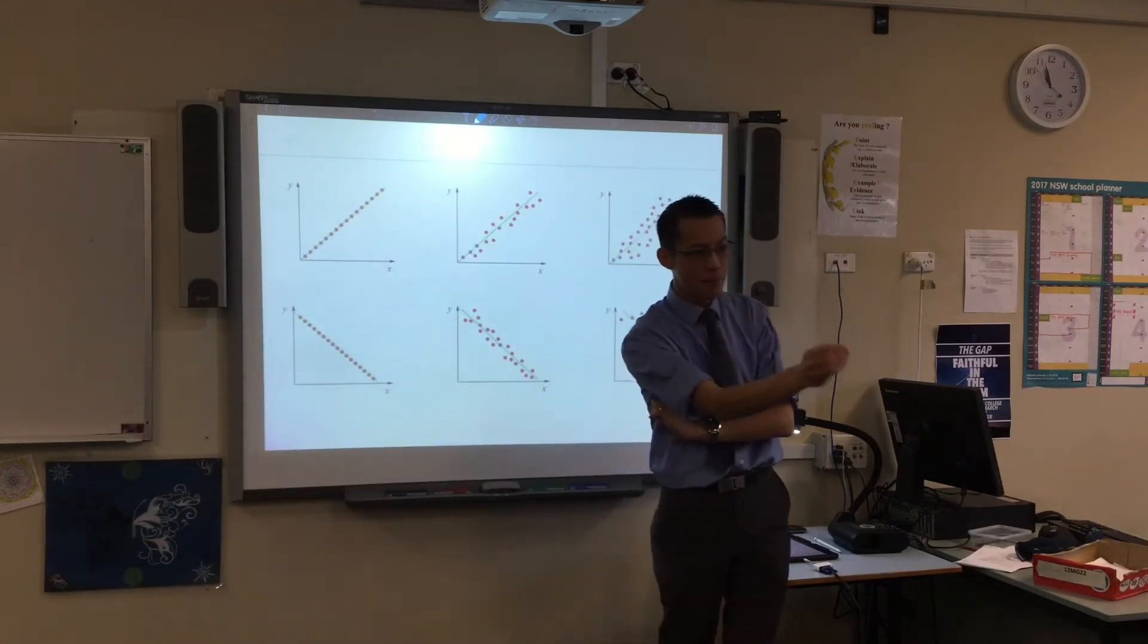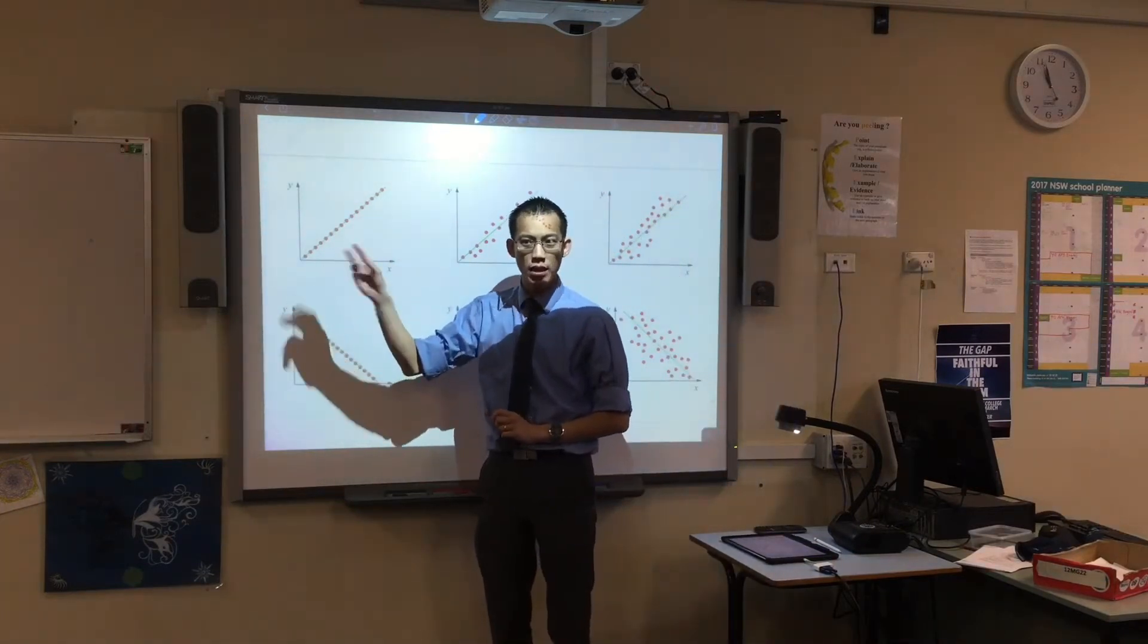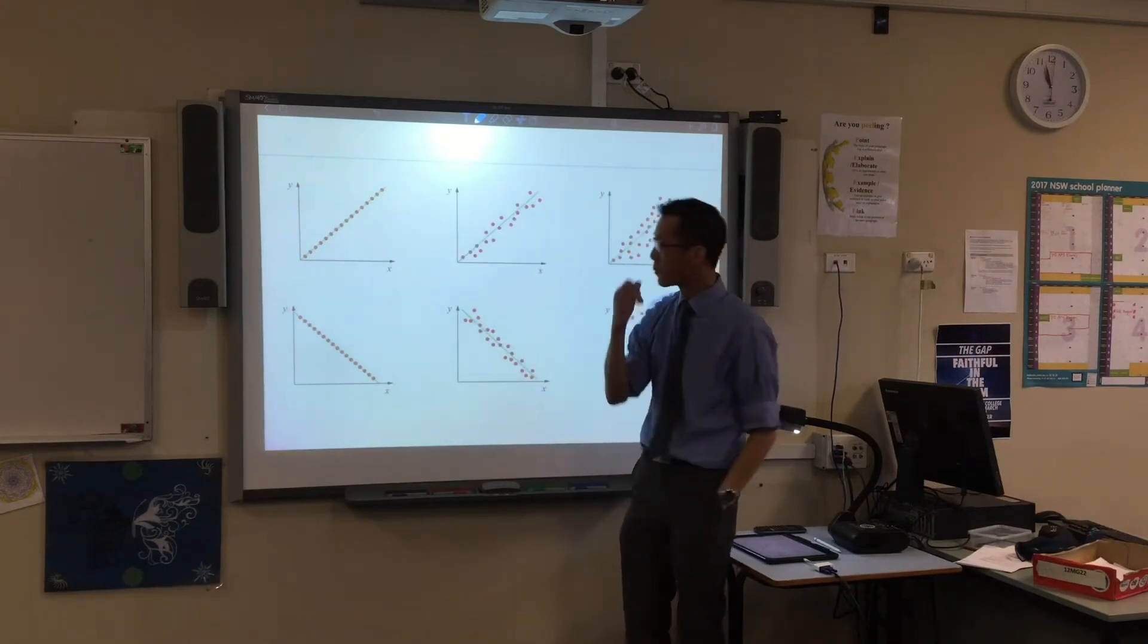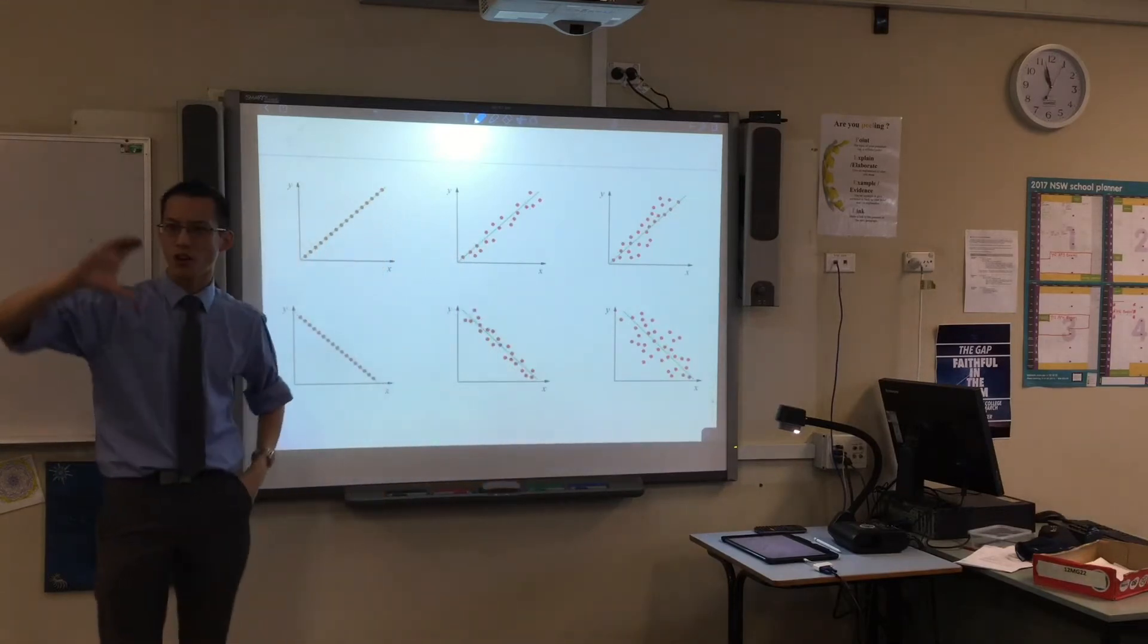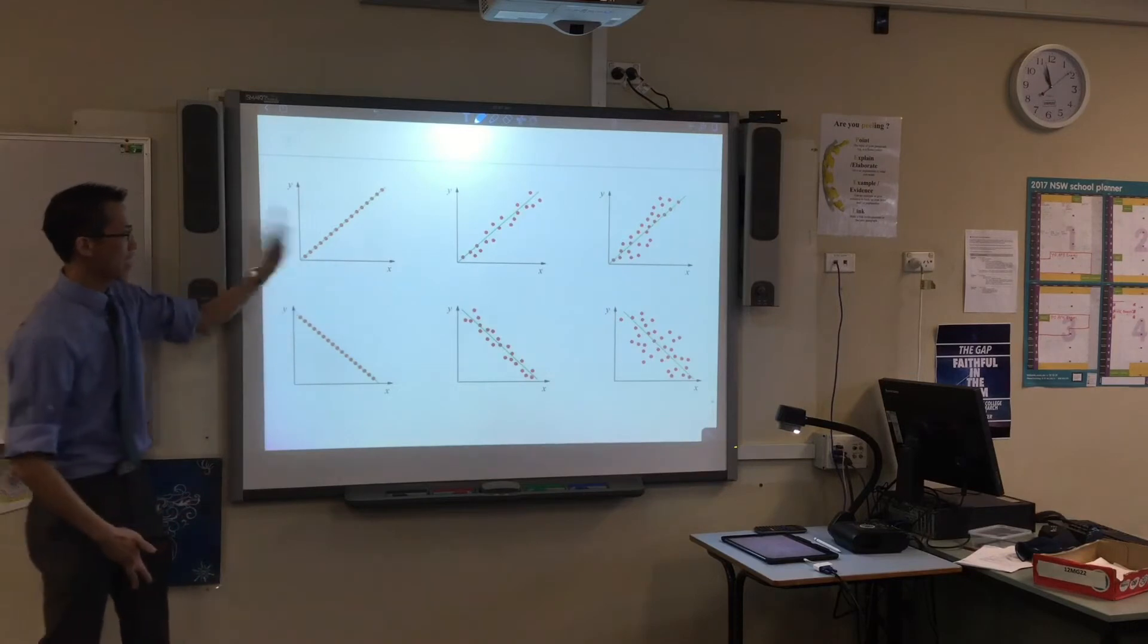Yeah, okay, so numbers but specifically numbers that you're maybe measuring or recording about someone. There's two of them, two variables, so that's why we call this bivariate data. As opposed to if you saw like a chart with different heights of people, there's only a single variable but this is two and each axis represents a different one.